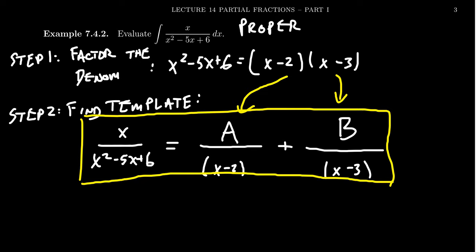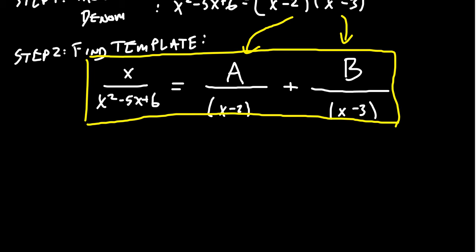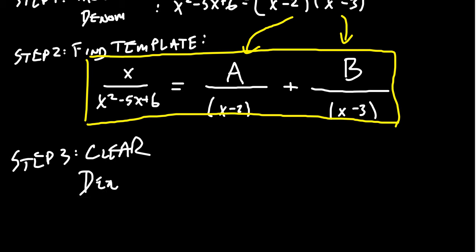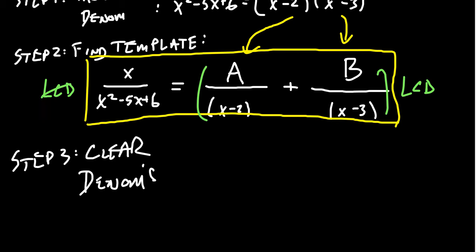Now that we have our template, the template itself is an equation. Step 3 is to clear the denominators — that is, multiply both sides of the equation by the LCD. The LCD is x squared minus 5x plus 6, which is x minus 2 times x minus 3. On the left-hand side, the denominator cancels out completely.